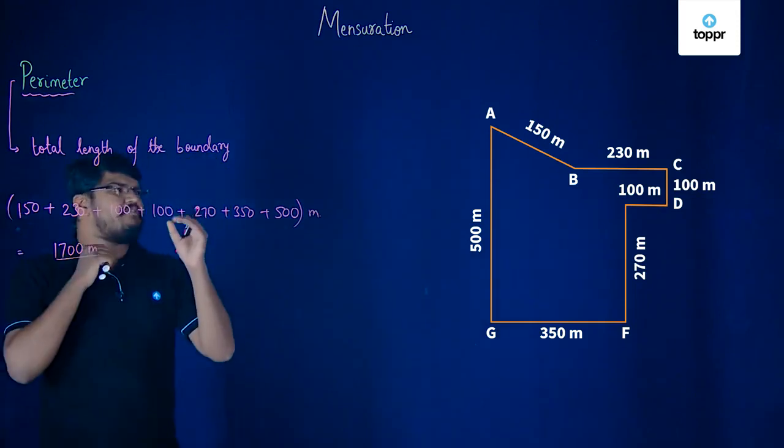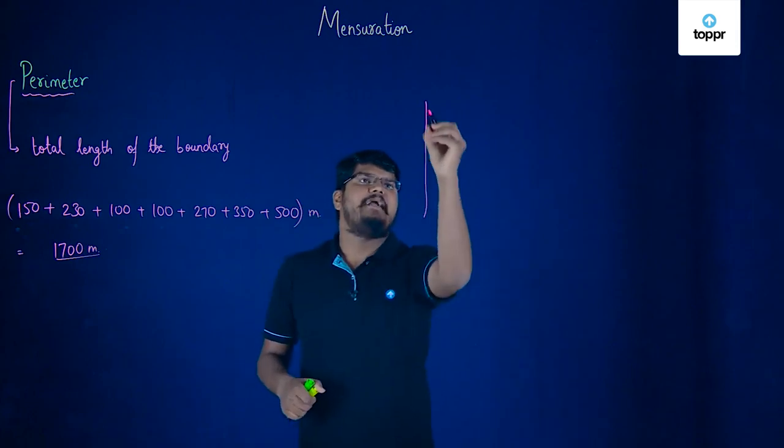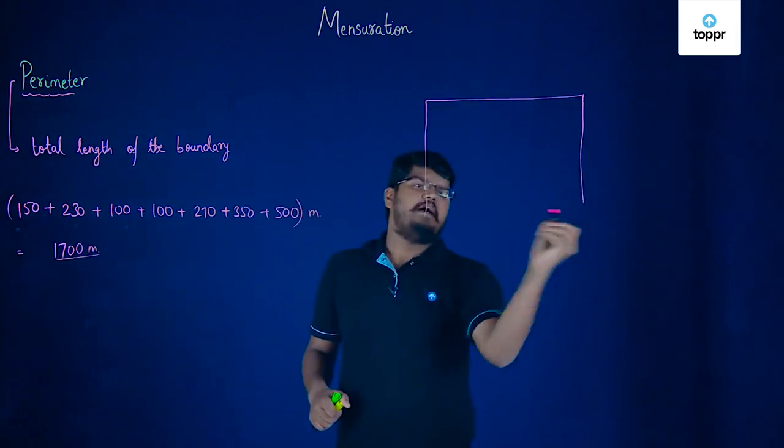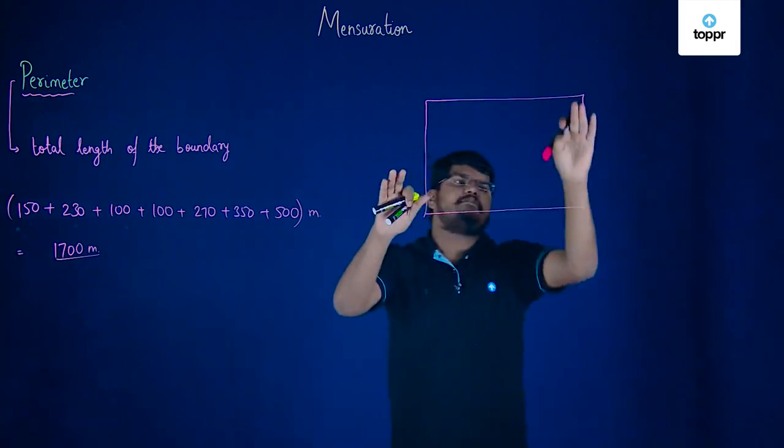Like, if I now remove this figure and if I now draw a rectangle over here. Now, this rectangle, it's basically a four-sided figure and you can see that it has boundaries.